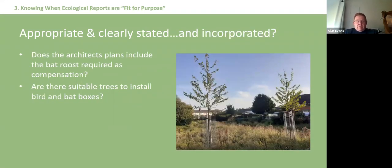It's important to consider whether compensation and mitigation measures can actually be incorporated into the development. Going back to the point about architects' plans and bat roofs - are there suitable trees to install bird and bat boxes on? There was at least one site where bird boxes were proposed but there were no trees to install them on. Recently planted trees of four or five metres high will not support a bird box. It's all about engagement with architects and others to ensure ecological features are incorporated.